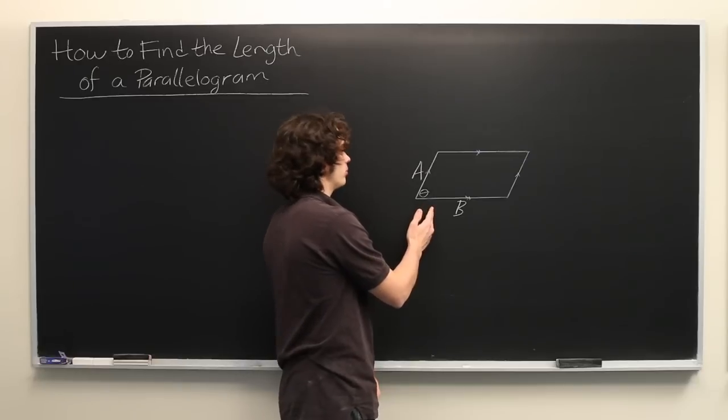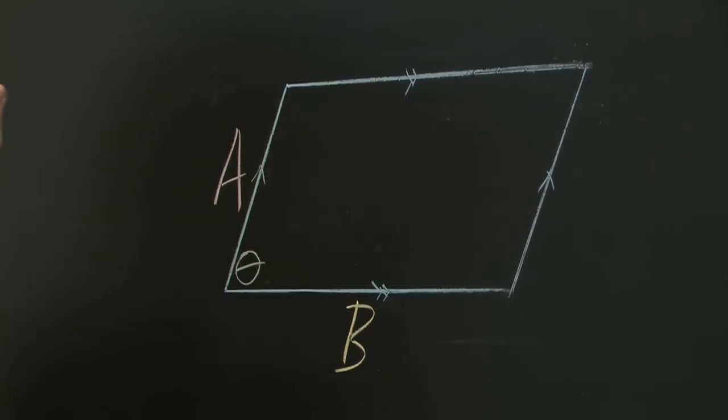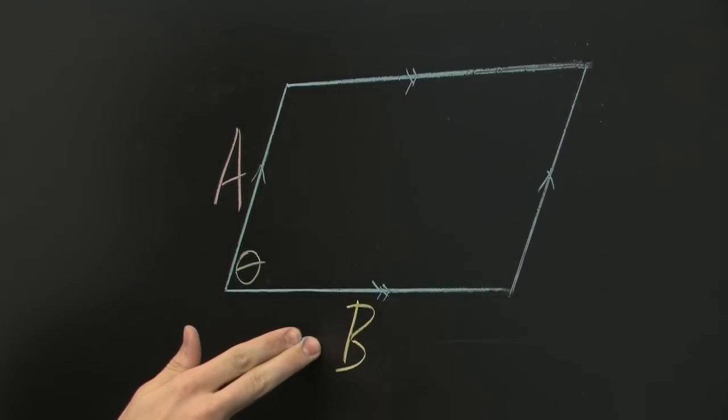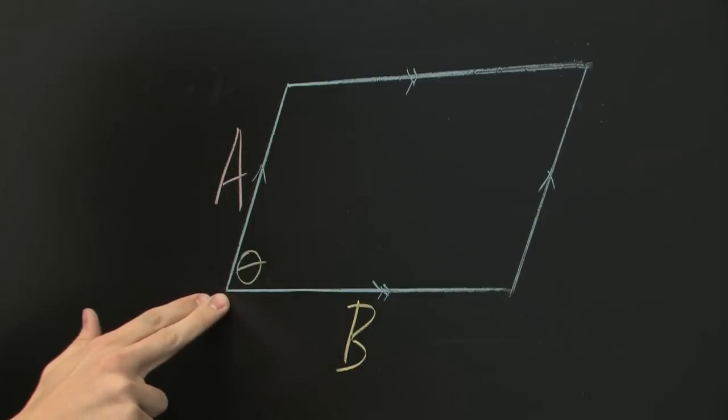Here we have a parallelogram where this side is of length a, where a is any number, this side is of length b, and we know an angle theta.